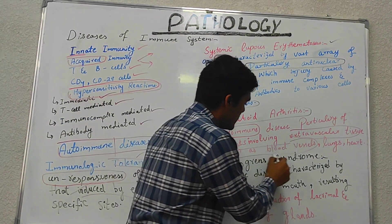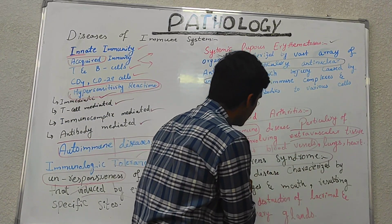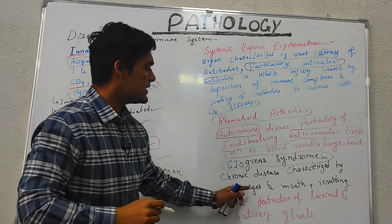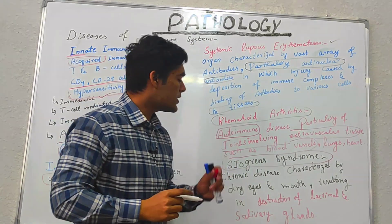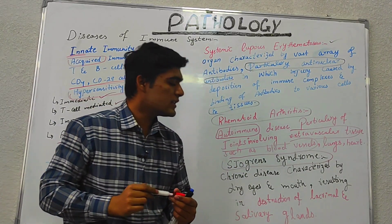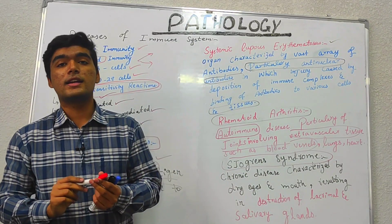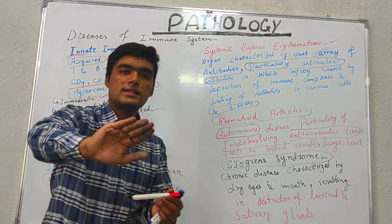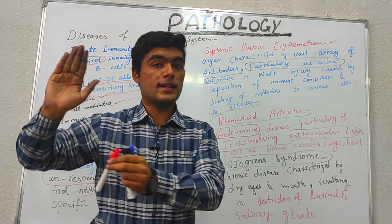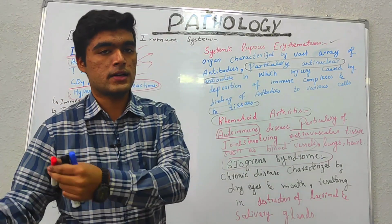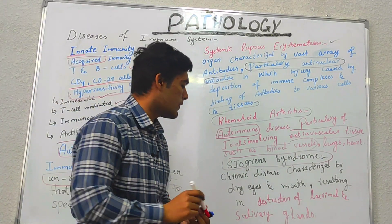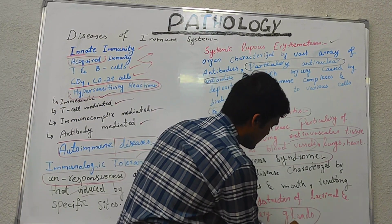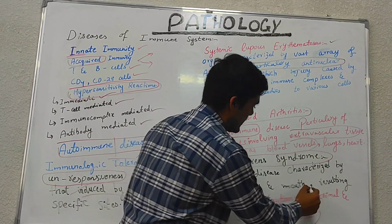The fourth condition is Sjögren's syndrome. It is basically a chronic disease characterized by dry eyes and dry mouth, resulting in devastating and destructive effects on the salivary glands and lacrimal glands.